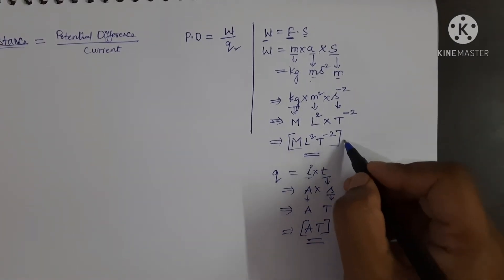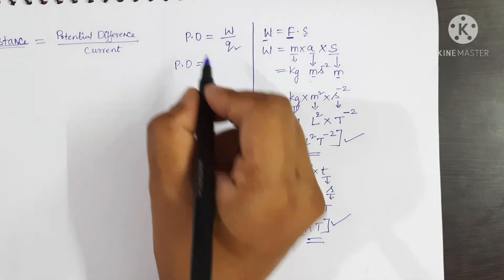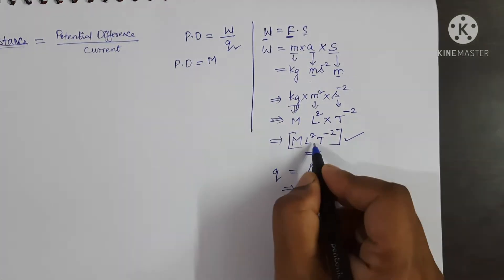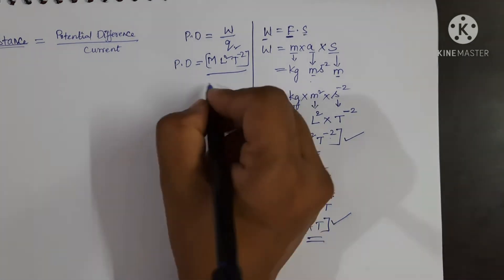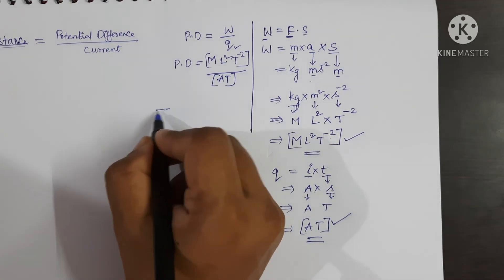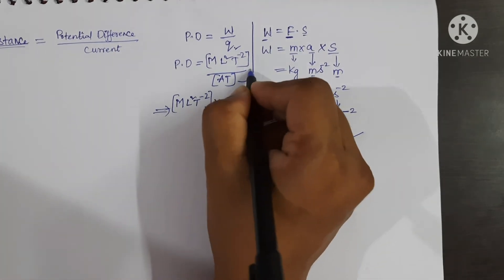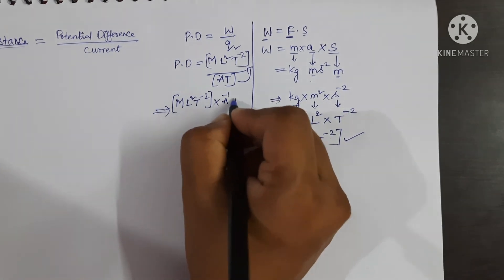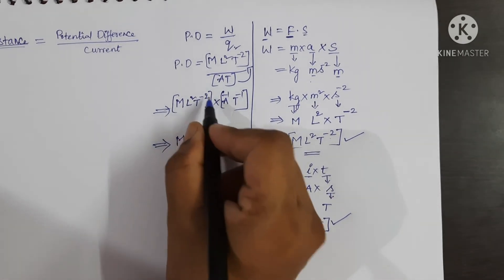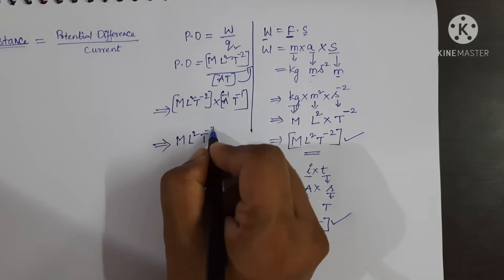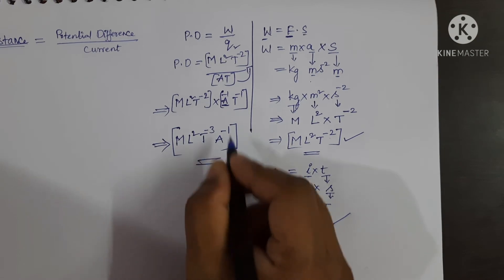Now substituting work done and charge into the potential difference equation: potential difference equals M L squared T power minus 2 upon A T. Simplifying, bringing A T to the numerator gives A power minus 1 and T power minus 1. Combining the T terms: T power minus 2 and T power minus 1 gives T power minus 3. So the dimensional formula for potential difference is M L squared T power minus 3 A power minus 1.